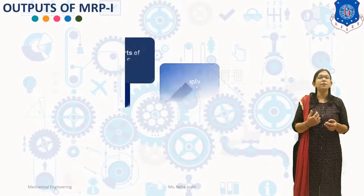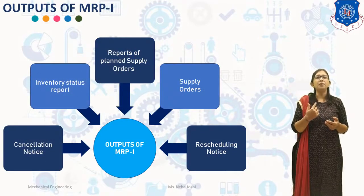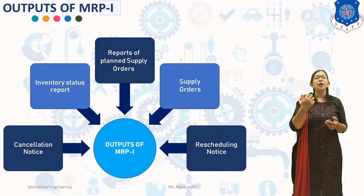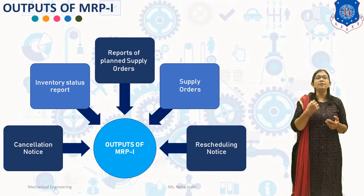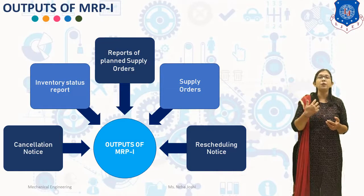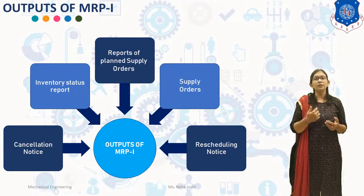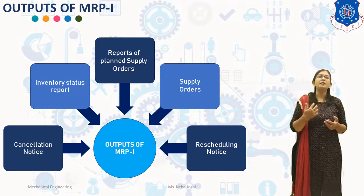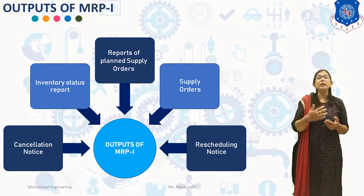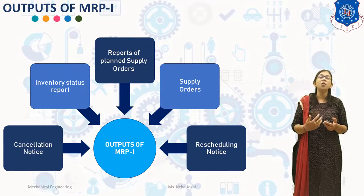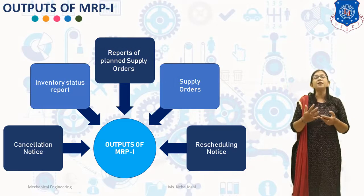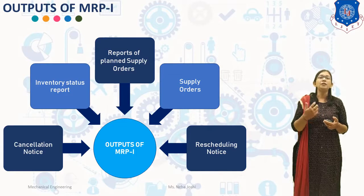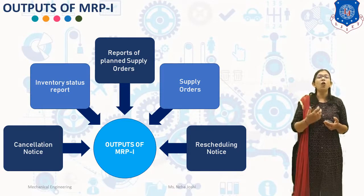The outputs of MRP-1 include: first, report of the planned supply order — these reports contain supply orders planned to be released in the future; second, supply orders — these are to be issued by the purchase department; third, rescheduling notice — this indicates changes in due dates of supply orders due to changes in the master schedule; fourth, cancellation notice — this informs the cancellation of supply orders because of changes in the master schedule; and fifth, inventory status report — this gives the detailed status of the inventory.